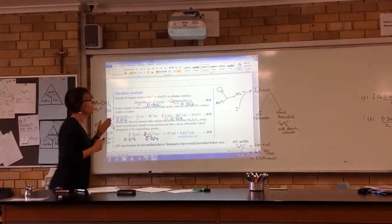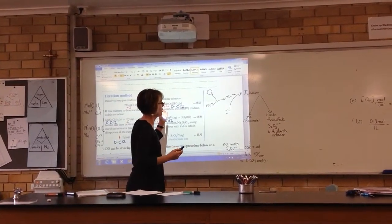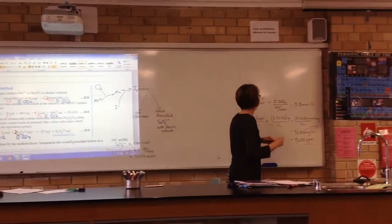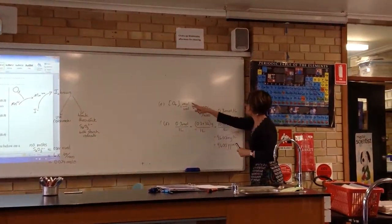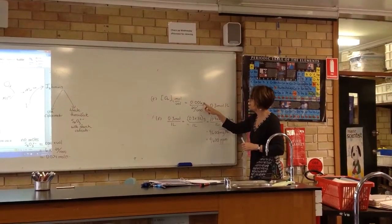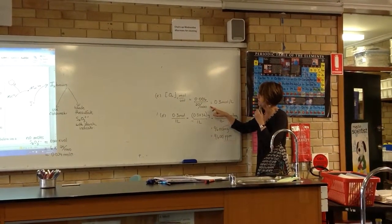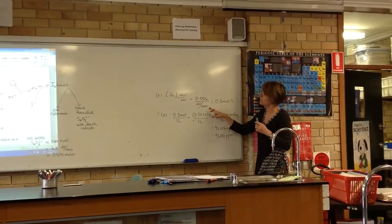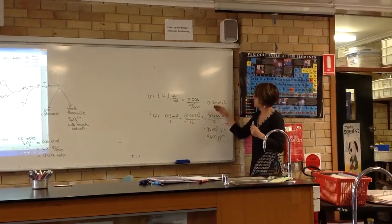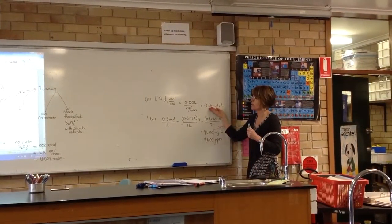So over here then, to follow that calculation through, remember we're wanting the concentration of oxygen. Concentration of oxygen is the amount of moles divided by the volume. So we were told that our sample pad was a 20 mL sample. So doing that calculation, we get an answer of 0.3 moles per liter.